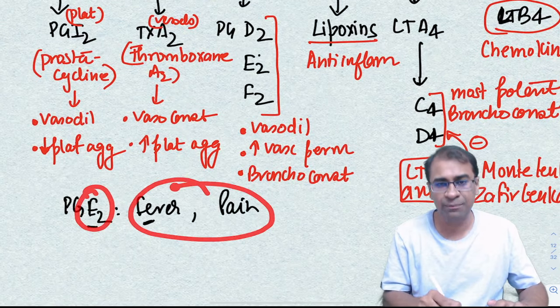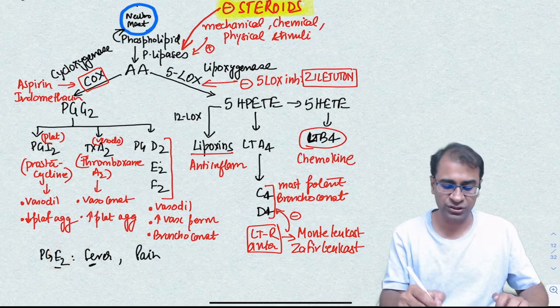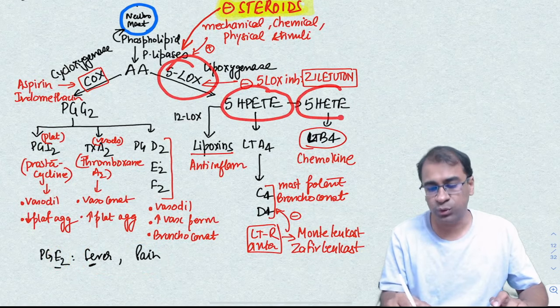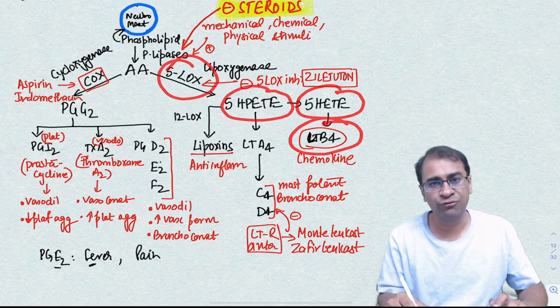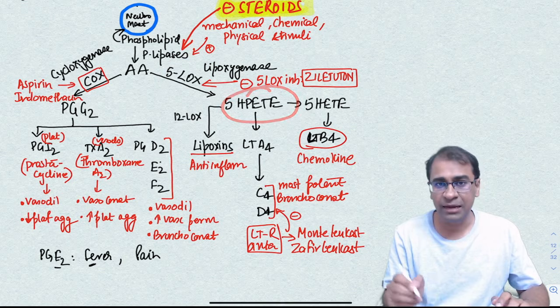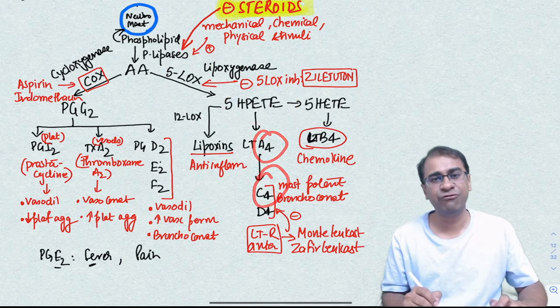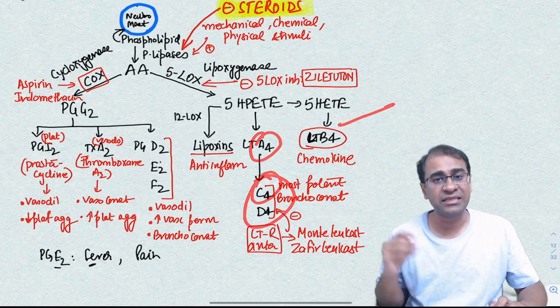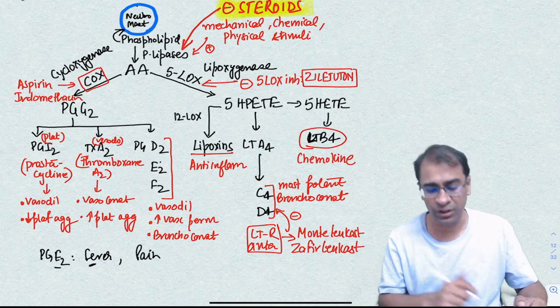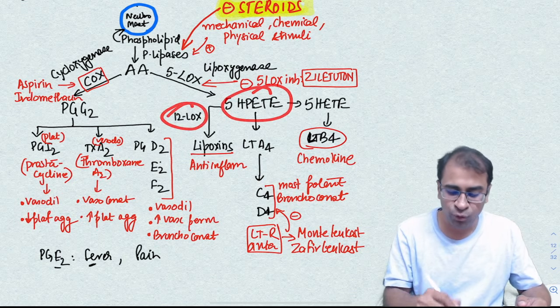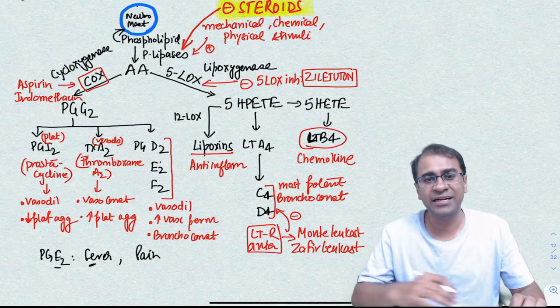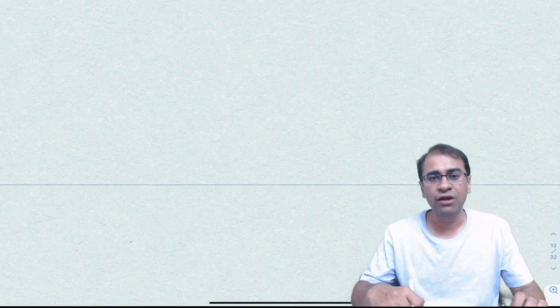In the leukotriene pathway, you must remember that the 5-LOX first makes HPETE molecule which converts to HETE to make leukotriene B4, which I told you is a very important chemokine. The HPETE then makes leukotriene A4, B4, C4, and D4. The B4 is here, so A4, C4, and D4. The C4 and D4 are the most potent bronchoconstrictors ever known to the human body. The HPETE with the help of 12-LOX enzyme is making lipoxins, which actually is an anti-inflammatory agent.